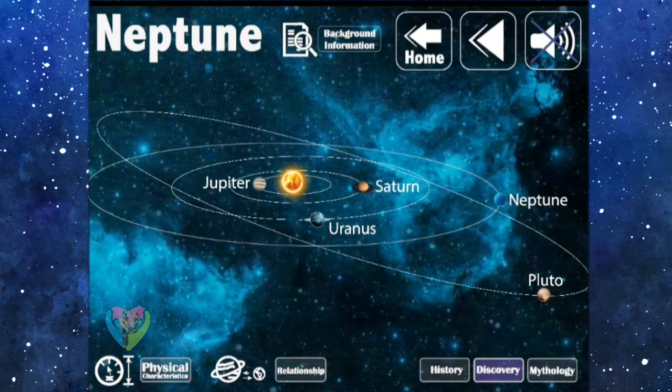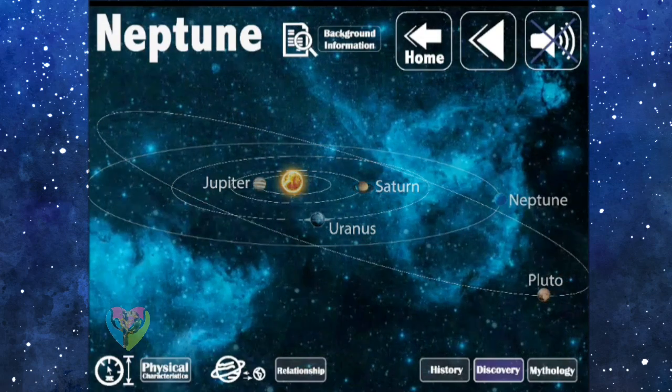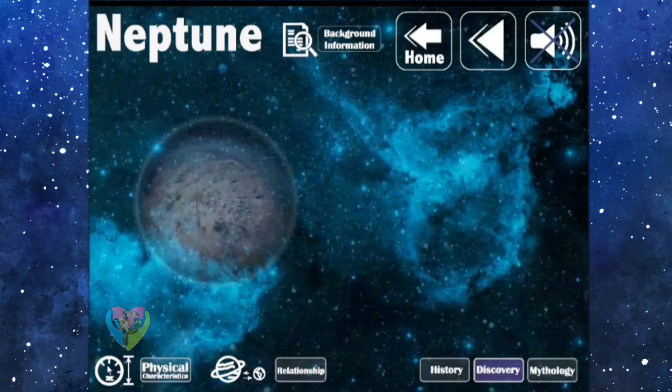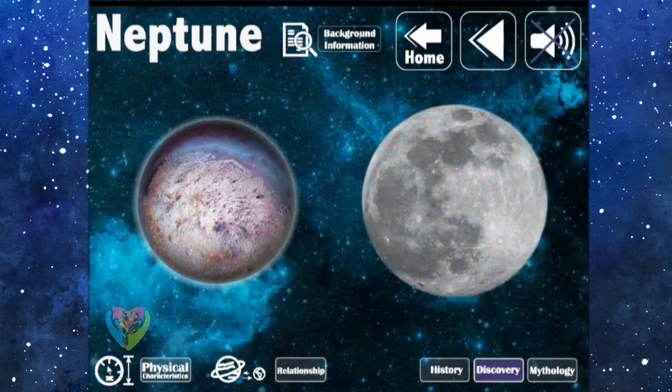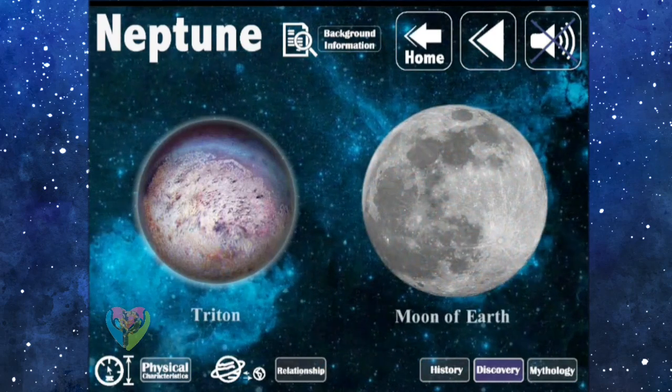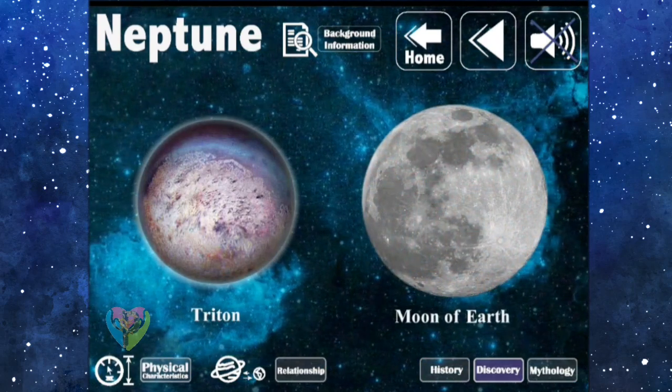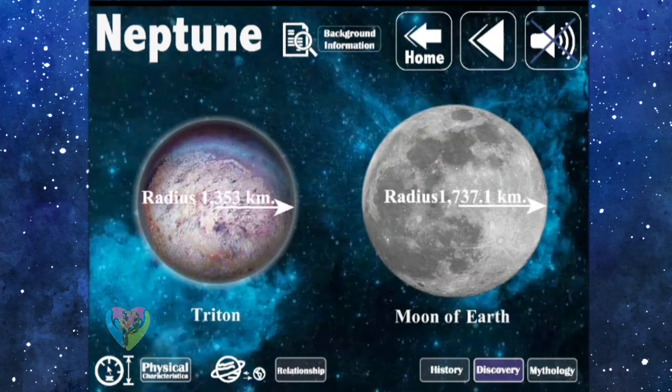In the same year, they also found a large natural satellite of Neptune called Triton, which is slightly smaller than the moon of Earth. Triton is the only large natural satellite in the solar system with a retrograde orbit around Neptune.